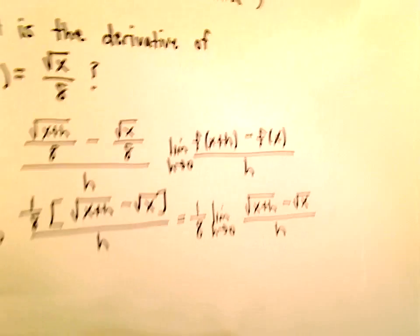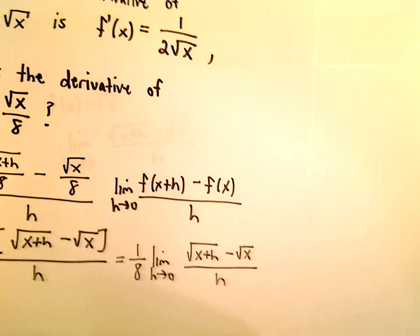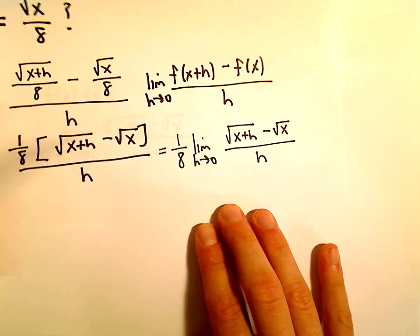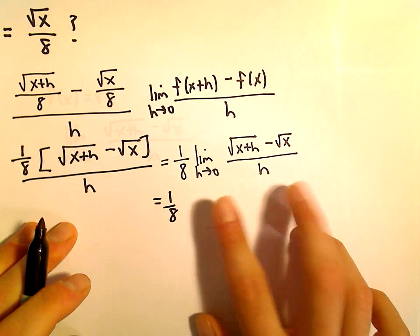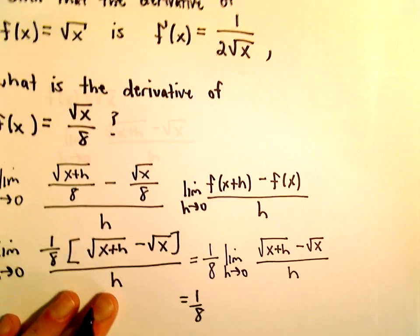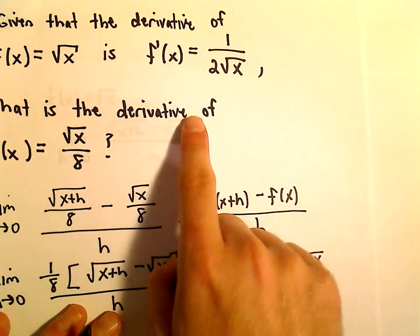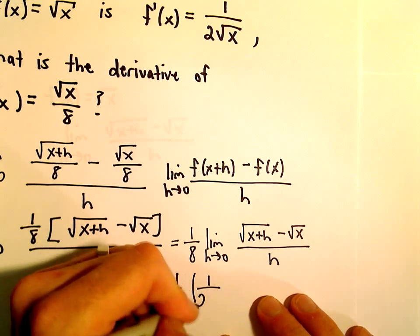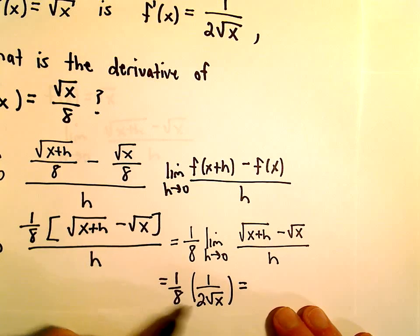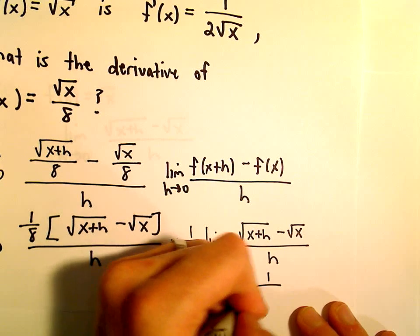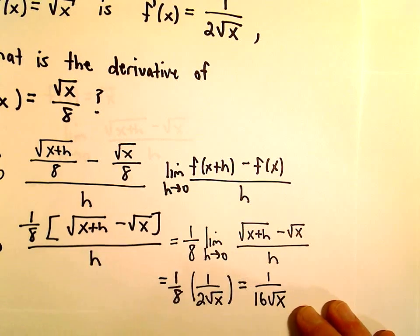So, what I'm trying to say is, we can actually rewrite this thing. This would just simply be equal to 1 eighth times the derivative of the square root of x function. But, we're already given that the derivative of the square root of x is 1 over 2 square root of x. So, now all we have to do is just multiply the 8 and the 2, and we'll get 1 over 16 times the square root of x.